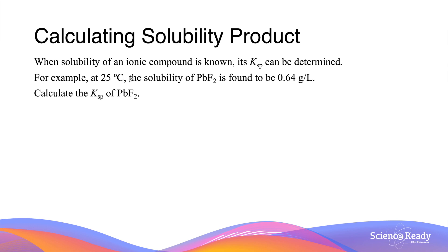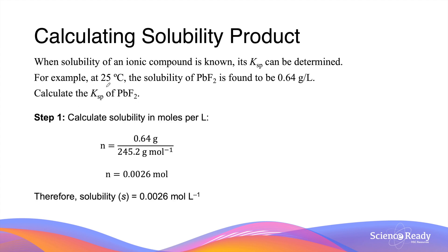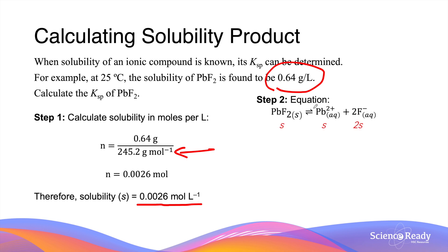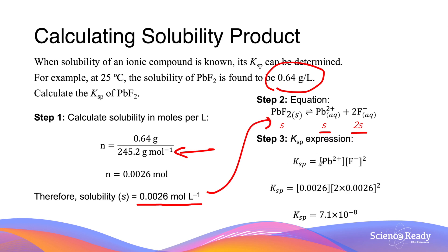While Ksp values of many ionic compounds are provided in the data sheets, you can still be asked to calculate them using solubility values given by the question. Here's an example: at 25 degrees Celsius, the solubility of lead fluoride is found to be 0.64 grams per liter — calculate the Ksp of lead fluoride. The first step is to convert the given solubility from grams per liter into moles per liter by dividing by the molar mass of lead fluoride, which gives us 0.0026 moles per liter. Next, write out a balanced chemical equation for the dissolution of lead fluoride. Using the molar ratio, derive the concentrations of lead and fluoride ions in terms of solubility. Then write the Ksp expression and substitute: for lead, the concentration equals the solubility; for fluoride, it will be double the solubility. This gives us the Ksp value.